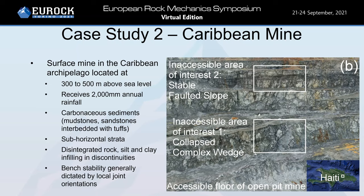The second case study takes us to a surface mine in the Caribbean. The engineered slopes are located at 300 to 500 meters above sea level, in a tropical setting receiving 2 meters of annual rainfall. The geology includes carbonaceous sediments including mudstones, sandstones, and interbedded tuffs. The strata is sub-horizontal and interlayered with disintegrated rock, silt and clay infilling, and discontinuities. In most cases, bench stability is generally dictated by a single joint or multiple joints forming wedges. The areas of interest were temporarily inaccessible in the mine due to the progress of the open pit. Area of interest 1 comprised a complex collapsed wedge, and the second area was a stable slope that was thrust faulted.